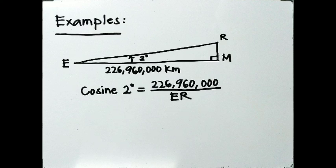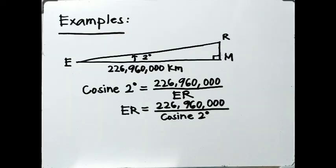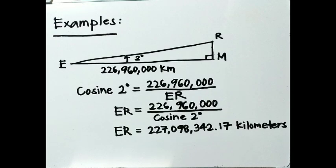In the next example, using the same distance from Mars and the angle of 2 degrees, find the distance of rover Perseverance from Earth before it reaches Mars. The equation is: cosine 2° = 226,960,000 km / ER. Thus, ER = 226,960,000 km divided by cosine 2°. Therefore, the distance of rover Perseverance from Earth before it reaches Mars is 227,098,342.17 km.